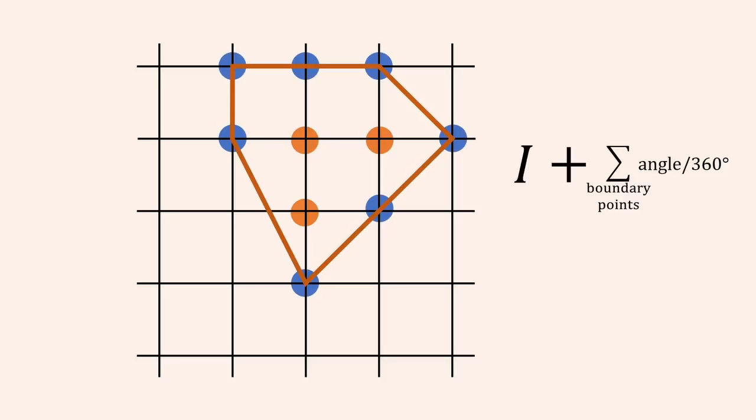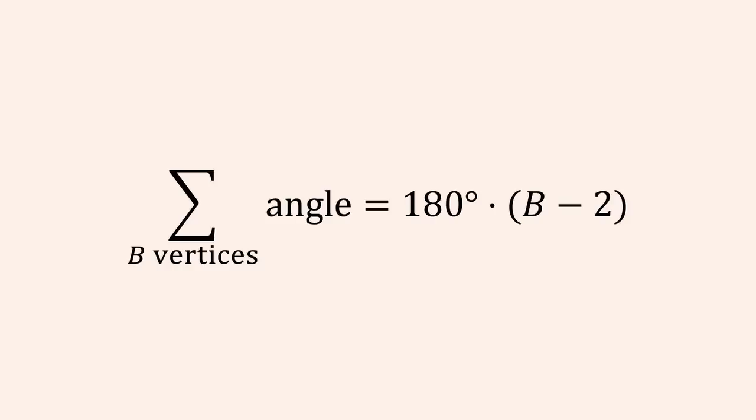Hang in there, we're close. Do you remember your geometry lessons? The sum of the interior angles of a polygon with b vertices is 180 degrees times b minus two.